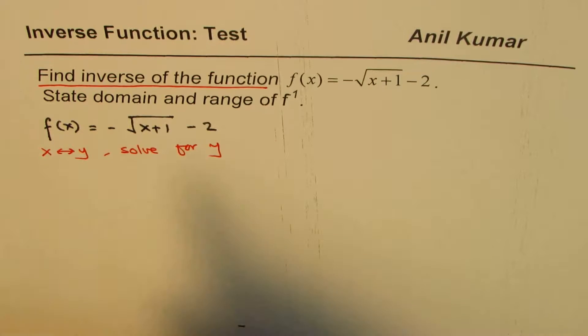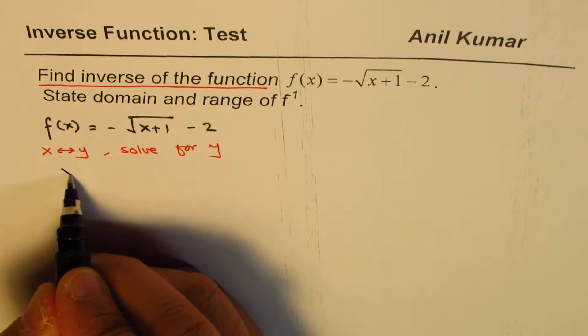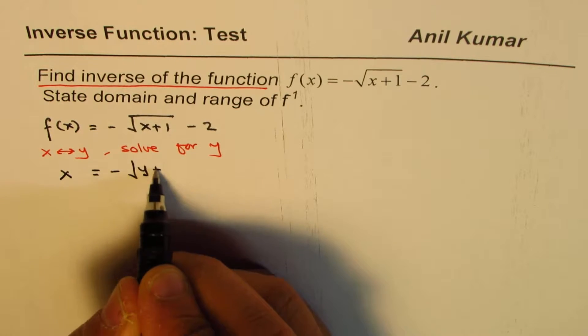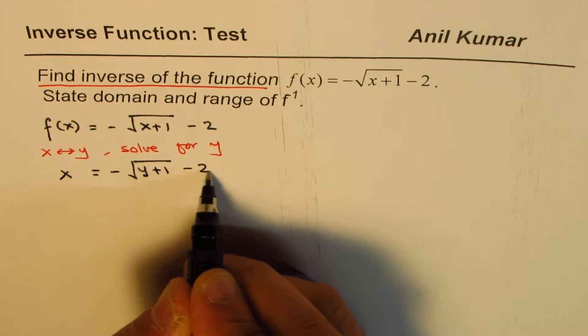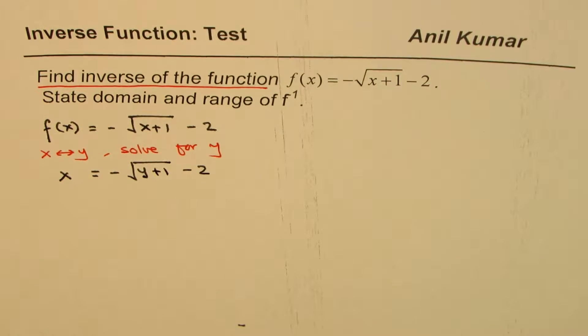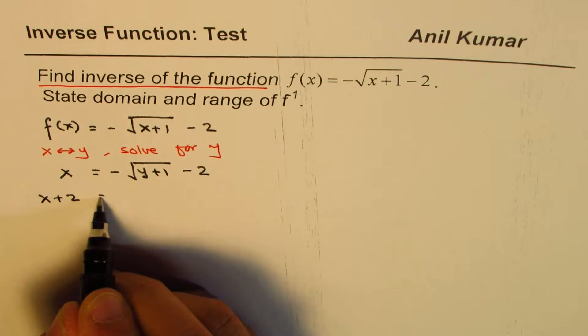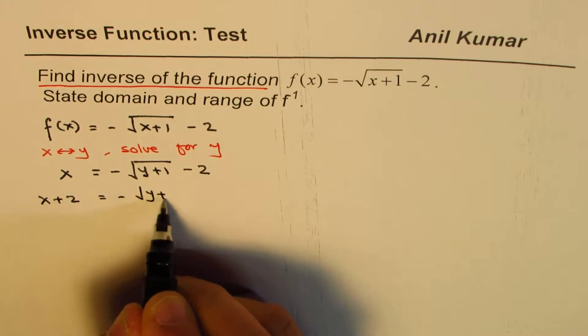So let's do it. So once you do it, you get this as x and this becomes y minus square root of y plus 1 minus 2. Now, easy way to do it is take 2 this side. So x plus 2 equals to minus square root of y plus 1.